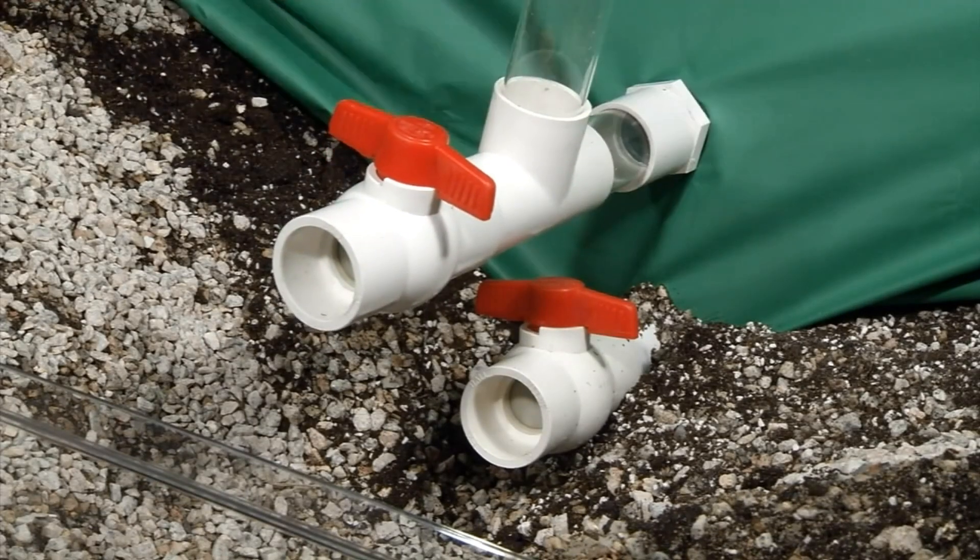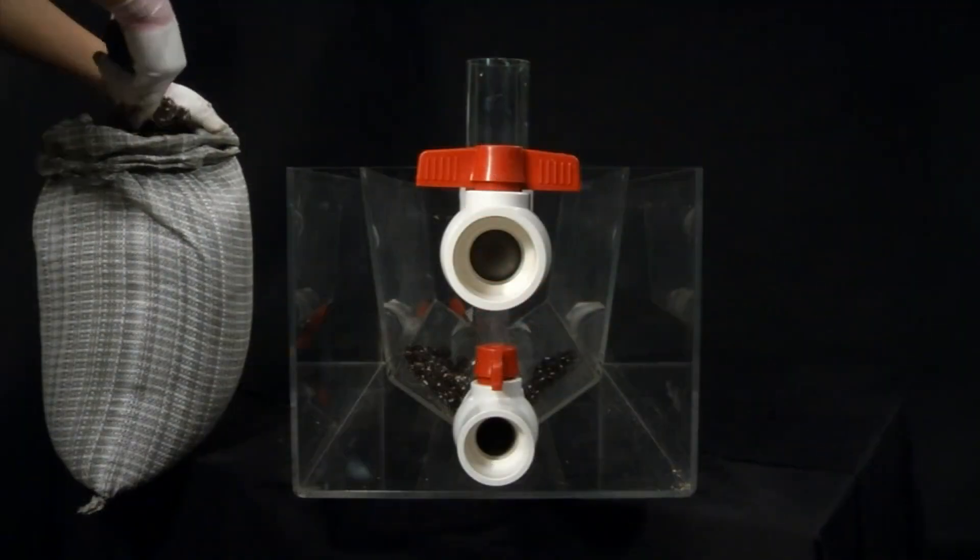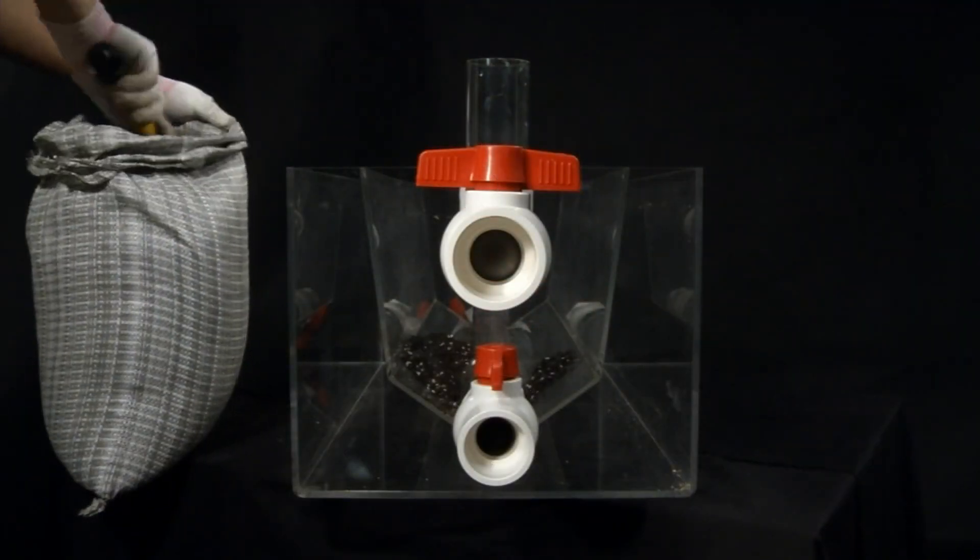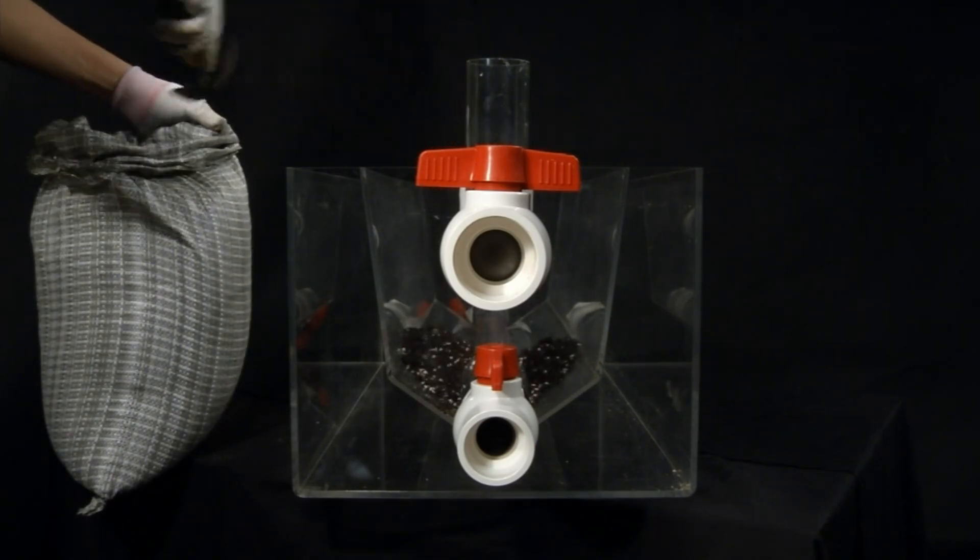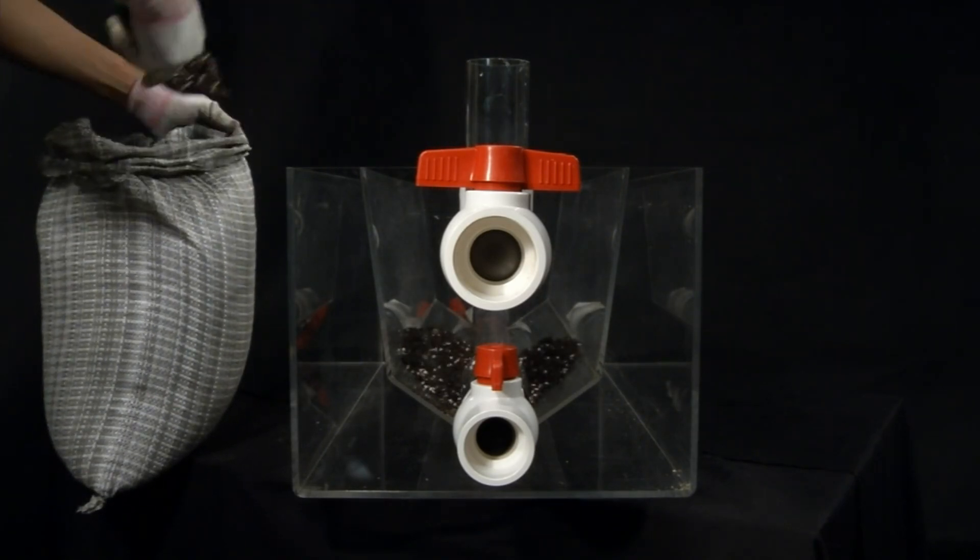Dimeter automatic drainage and irrigation combination can then be installed. After the installation of pipes, soil can be put in according to the needs of the plants for their growth.